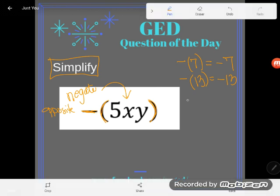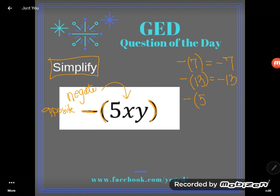That holds true to even something as complex as 5xy. If you wanted the opposite of 5xy, well you know what that'd be - it'd be just negative 5xy. You just kind of bring that negative inside. That's one super lovely way of thinking of negating, and that's the way I usually think of it as a mathematician.